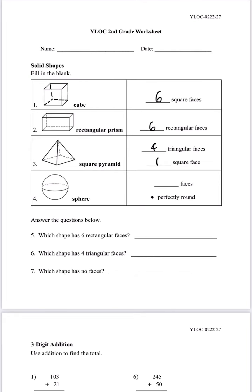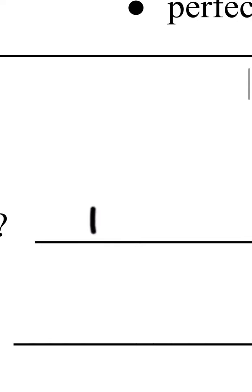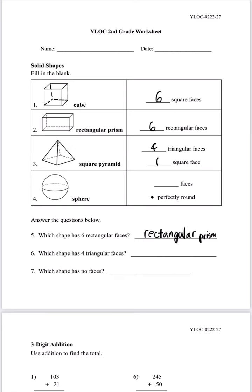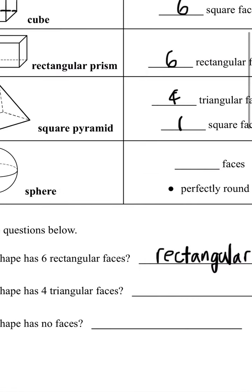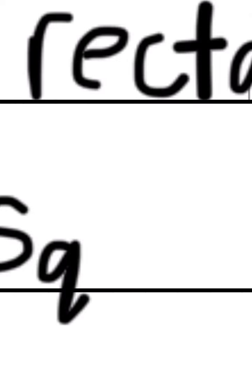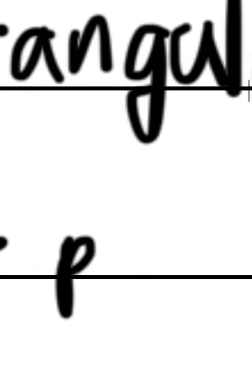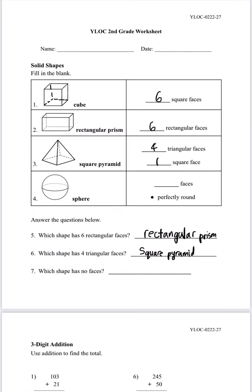Let's look at number five — it says which shape has six rectangular faces. It shows that the rectangular prism has six rectangular faces, so that is the answer for number five. Let's look at number six — which shape has four triangular faces? It shows that the square pyramid has four triangular faces, and that is the answer for number six. Let's move on to the next page.